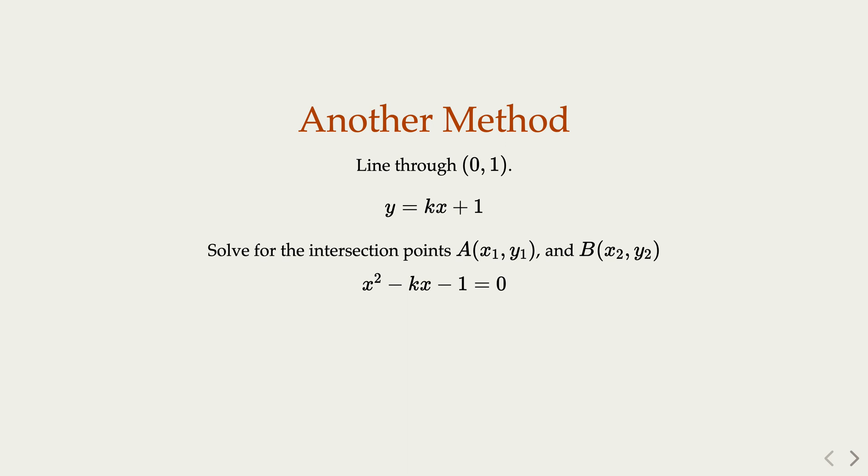Notice that the slope, that is y over x. In this case, because it's on the parabola, y over x is actually equal to x, because y equals x squared. So the product of the two slopes, two solutions, is x1 times x2. Of course, x1, x2 are the roots of the quadratic equation. We know that that's equal to negative 1.